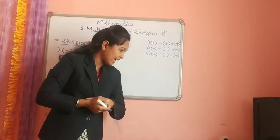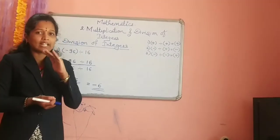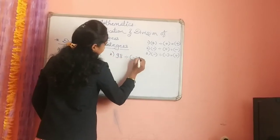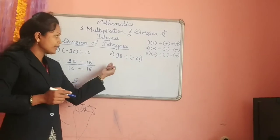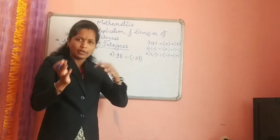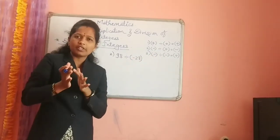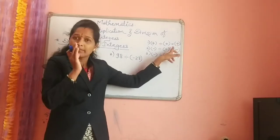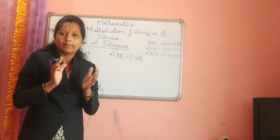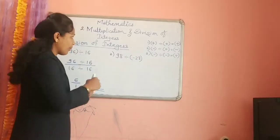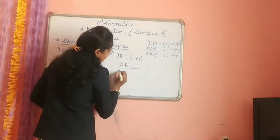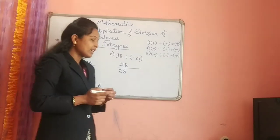The second example is 98 divided by minus 28. Again, one number is positive and the other is negative. Whether it's positive-negative or negative-positive, the order doesn't matter — the answer is always negative. Always remember this. So our answer will come in negative form. Let's remove the signs and work with 98 divided by 28.